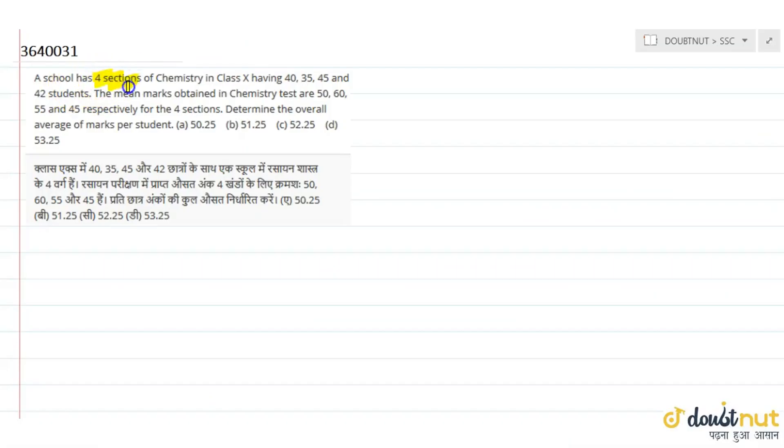Our school has 4 sections of chemistry in class 10, having 40, 35, 45, and 42 students. The mean marks obtained in the chemistry test are 50, 60, 55, and 45 respectively for the 4 sections. We have to determine the overall average of the marks per student.